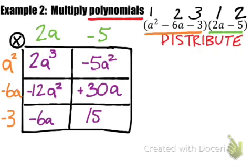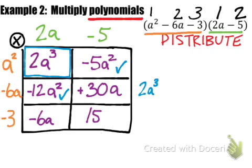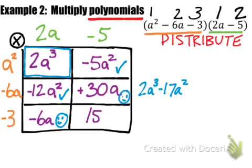Off to the right, I'm going to write down the products. Looking for the highest exponent first — 2a cubed has no like terms, so we write down 2a cubed. Next are the a squared terms: negative 12a squared and negative 5a squared combine to give negative 17a squared. Then the two like terms 30a and negative 6a combine to give positive 24a. The constant 15 has no like terms, so the final answer is 2a cubed minus 17a squared plus 24a plus 15.